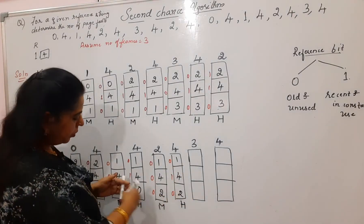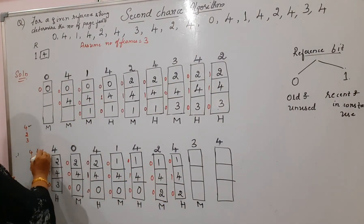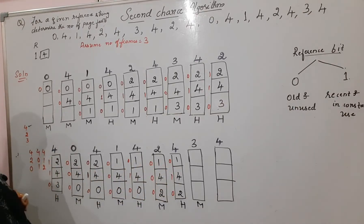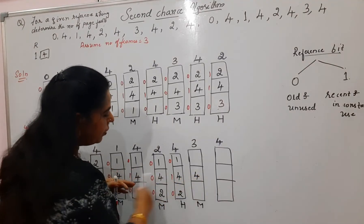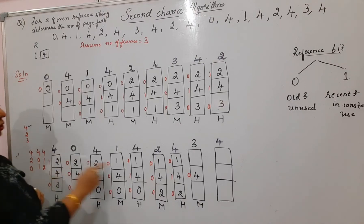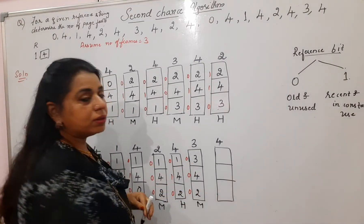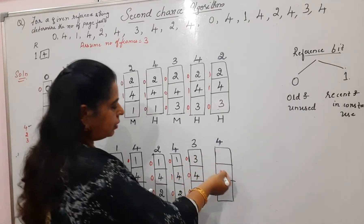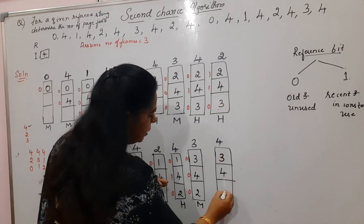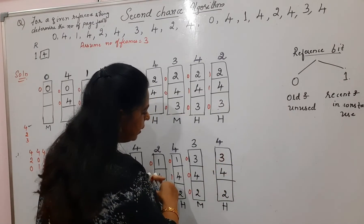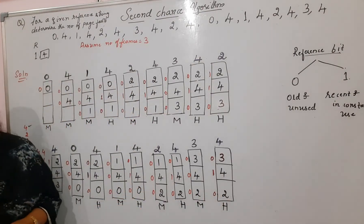Next is page 3 — miss. Current frames: 4, 1, 2. FIFO order: page 4 is oldest (reference bit one — skip, change to zero), next oldest is page 1 (reference bit zero — replace). Replace page 1 with page 3; reference bit for page 3 is zero. Finally, page 4 is demanded again — it is in memory, so change reference bit to one — hit. Page 3 carries reference bit zero.